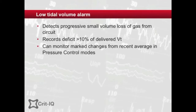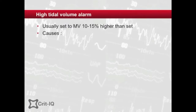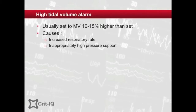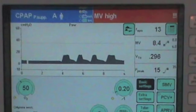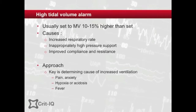In pressure-controlled modes, the tidal volume delivered is dependent on the pressure applied and the compliance and resistance of the system. Modern ventilators record average volumes and alarm when sudden deterioration of volumes occurs, suggesting a marked change in resistance-compliance characteristics. High tidal volume alarms may be triggered by an increased respiratory rate in assisted modes, pressure support settings that are too high for the patient, or changes in the patient's resistance and compliance in pressure-supported modes. The most important issue is to determine why the patient suddenly has a higher respiratory drive — usually related to pain, anxiety, hypoxia, acidosis, fever, or pulmonary embolism.